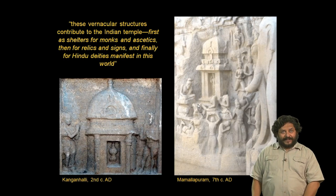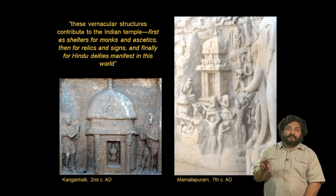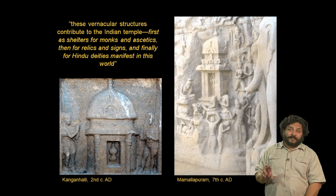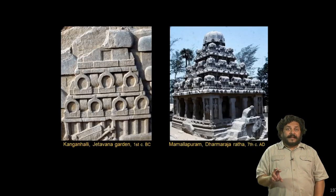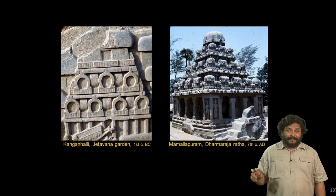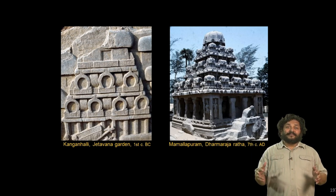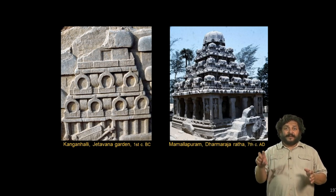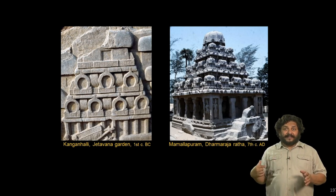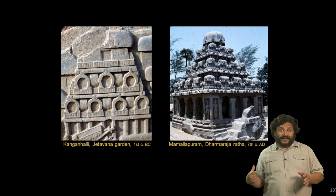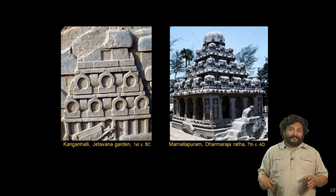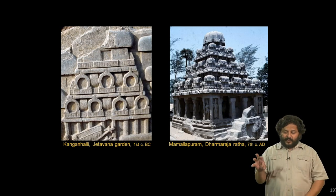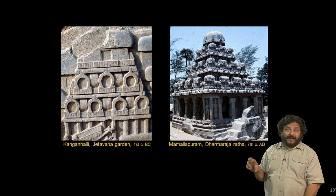Kutina temples or South Indian temples are built of simple modules called edicules. This simple hut is the module that makes up the spire of the South Indian temple. Seen in Buddhist reliefs at Kanganhali in the second century BCE to depict a mansion for the Buddha, a multi-storied palace built out of simple hut-like edicules. This same idea is seen in the Dharma Raja Ratha at Mahabalipuram in the 7th century CE, 800 years later — a multi-storied palace made up of small hut edicules, the square ones called kutas and the longitudinal ones called shalas.